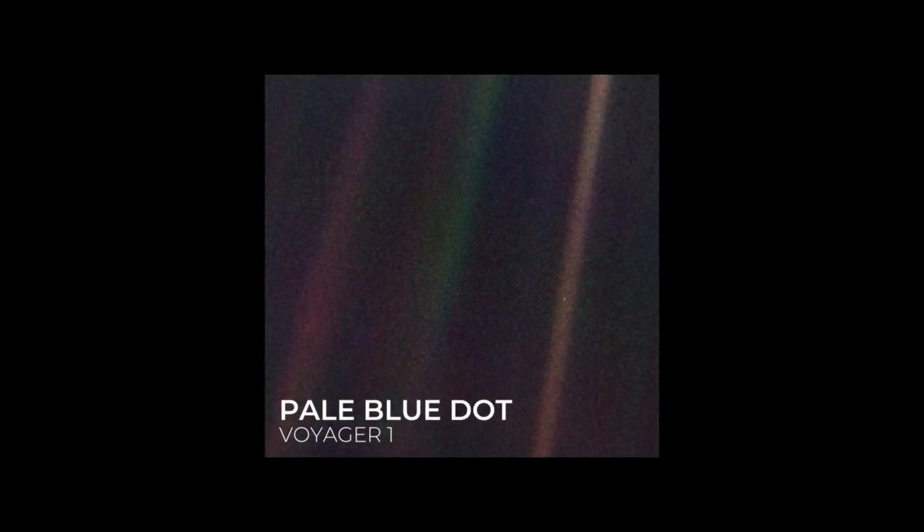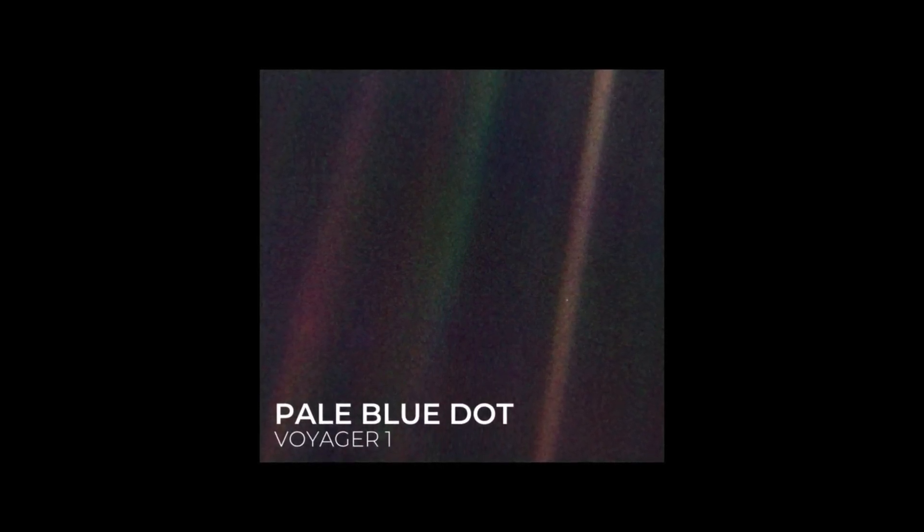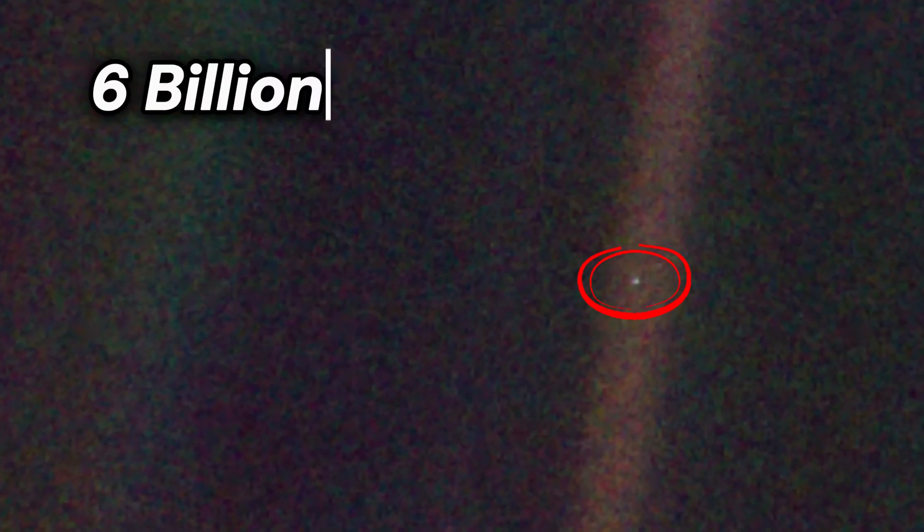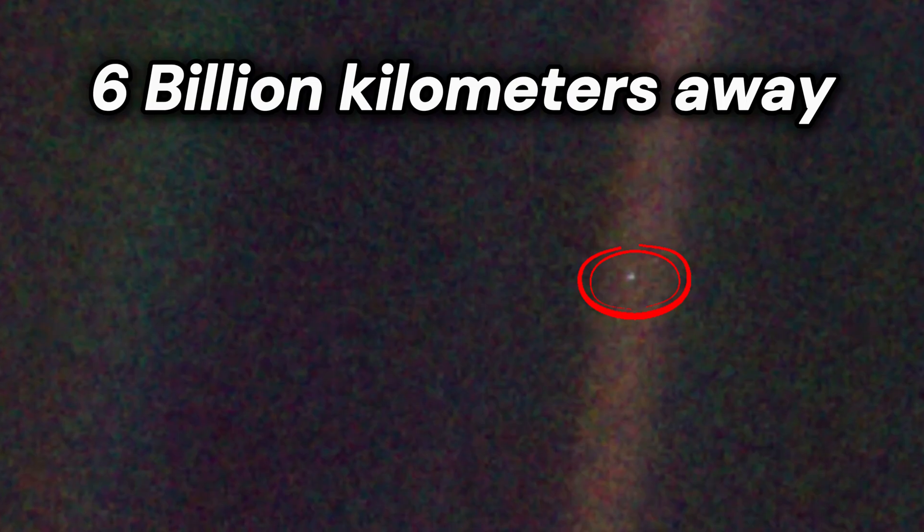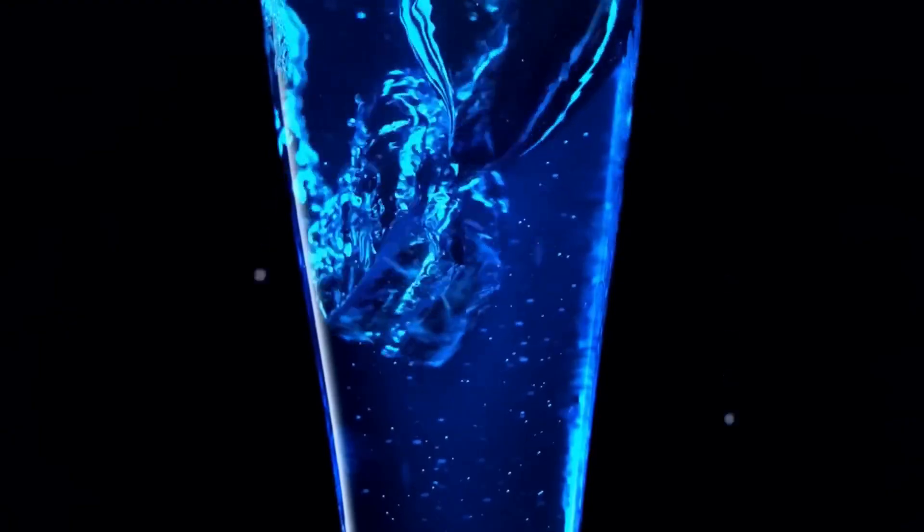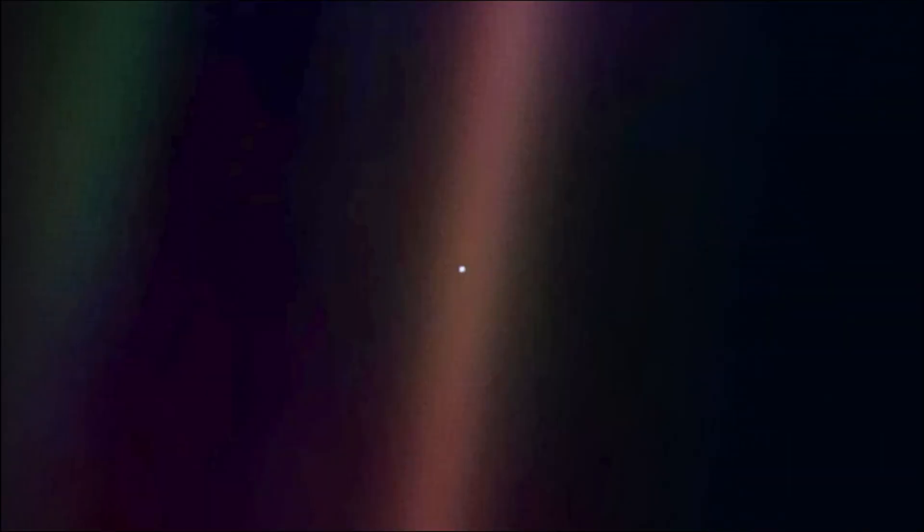This is the famous pale blue dot image taken by Voyager 1, showing our Earth as a tiny pixel six billion kilometers away. This image was taken before many of you were even born, but the elements and materials that made us are all contained in that tiny blue dot we call home.